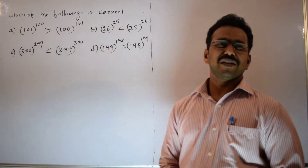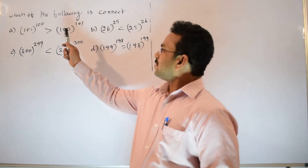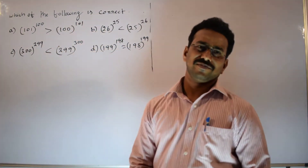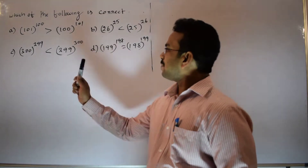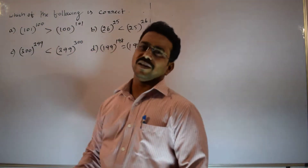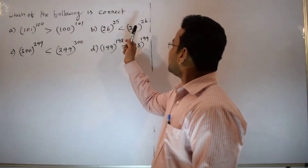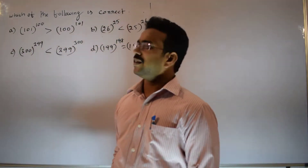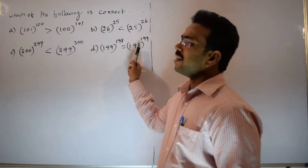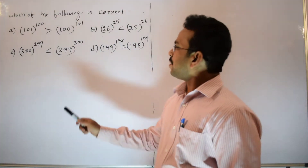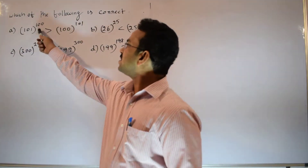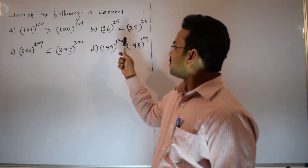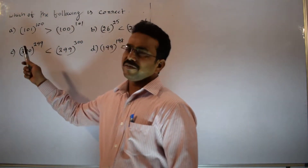What is the observation we can do here? Suppose you assume 100 as N. Then N+1 equals 101. Similarly, 25 is N and 26 is N+1. Likewise, 299 is N and 300 is N+1. Also 198 is N and 199 is N+1. The powers follow the same pattern: each base and its power are N+1 and N respectively.